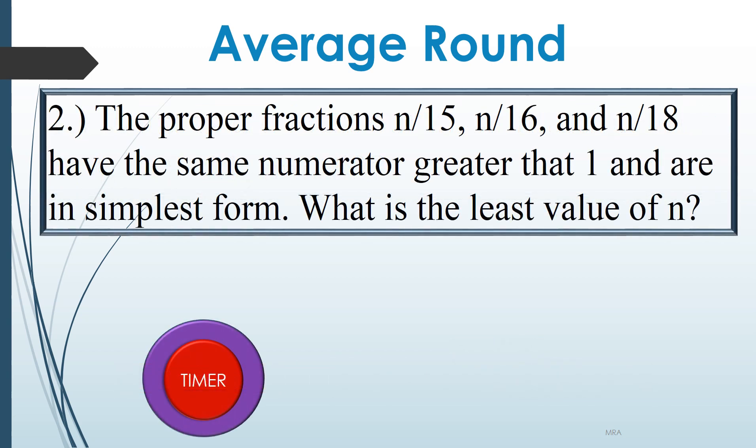The proper fractions n over 15, n over 16, and n over 18 have the same numerator greater than 1, and are in simplest form. What is the least value of n?